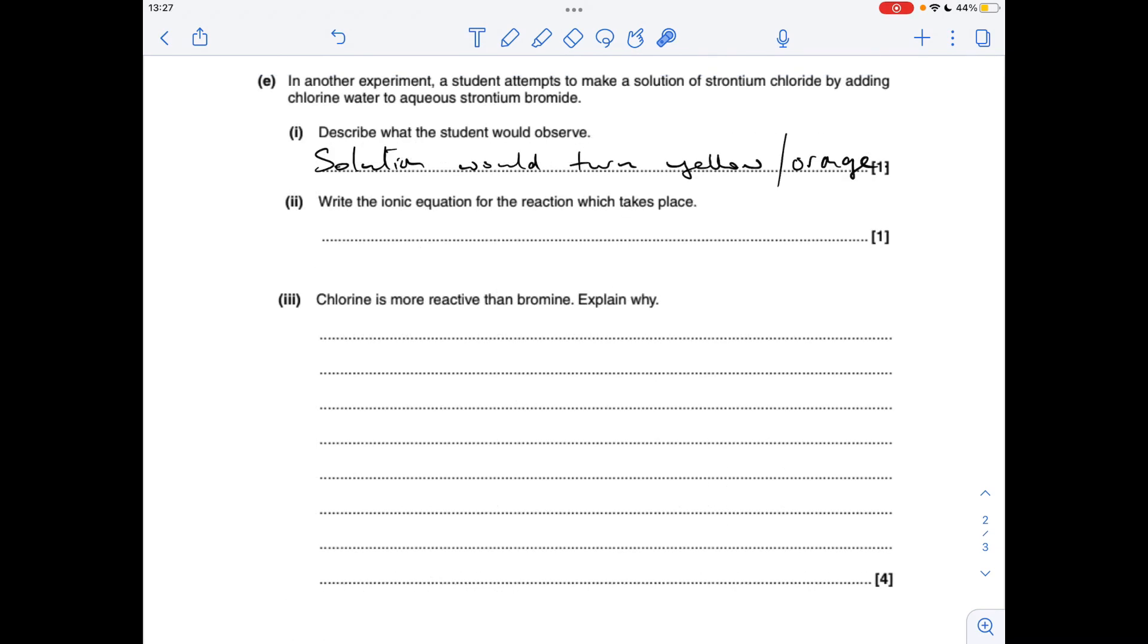Finishing off with part E, they're adding chlorine water to aqueous strontium bromide. Obviously chlorine is going to displace the bromine, it's more reactive. So the displaced bromine in aqueous conditions is going to have a yellowy-orange colour.